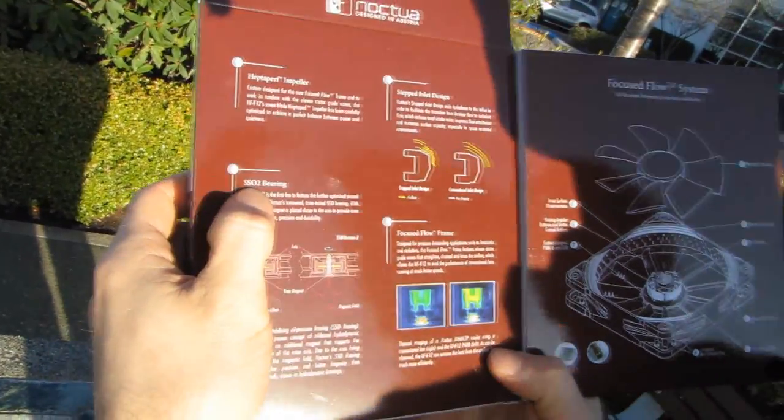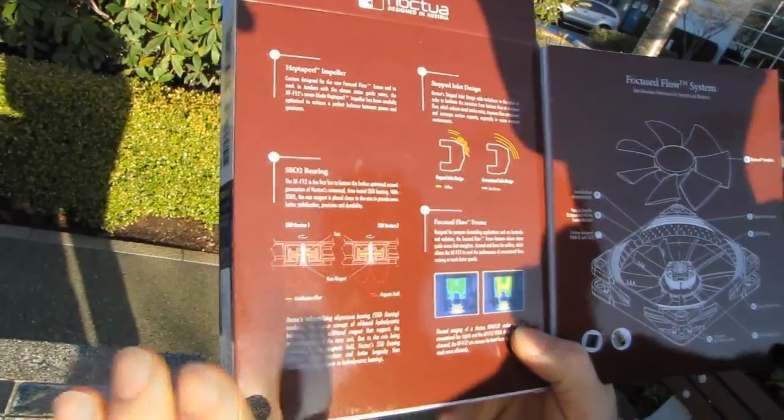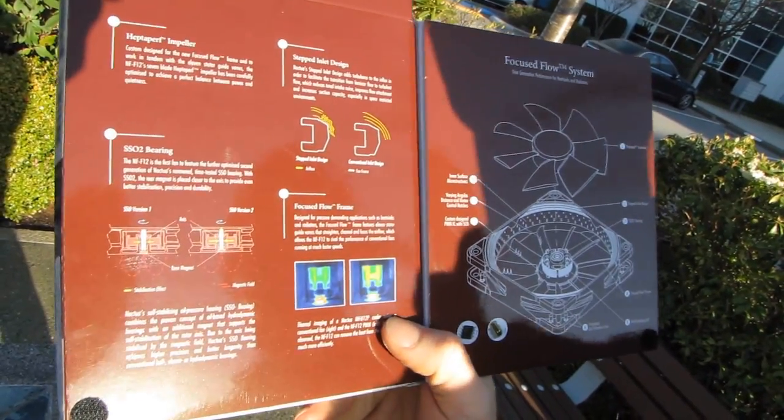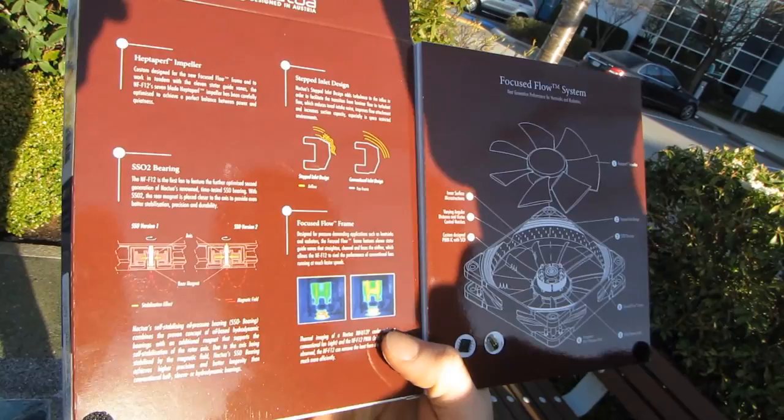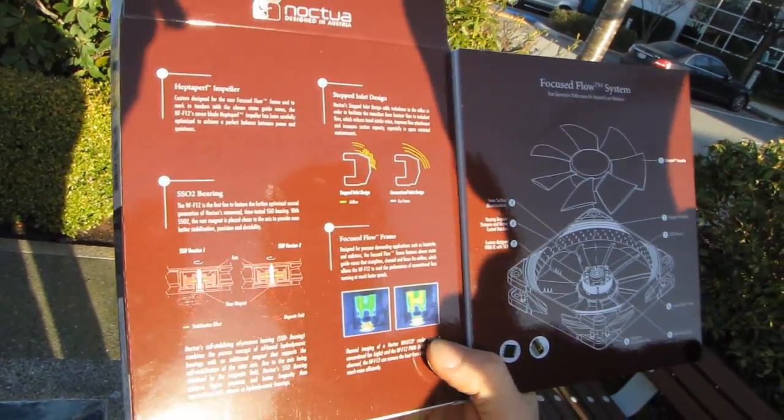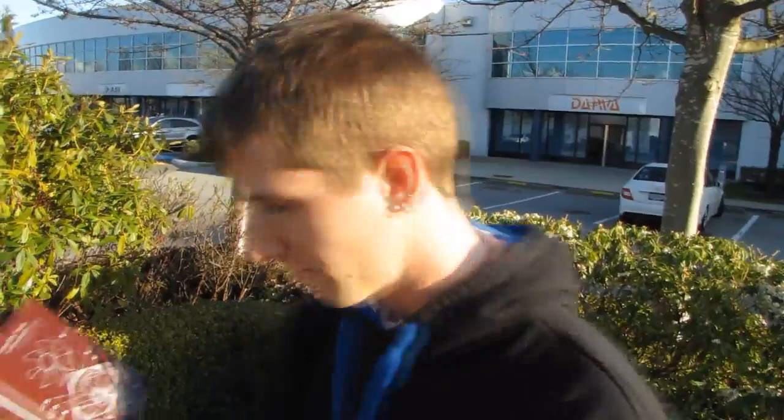The SSO2 bearing is an upgrade from the SSO version 1. You can see here they've drawn diagrams of them both. I'm not a fan engineer, so I don't know exactly what they mean by all of this, but they say it's even better than the time-tested SSO bearing, which means it's pretty good because the SSO version 1 bearing is awesome.